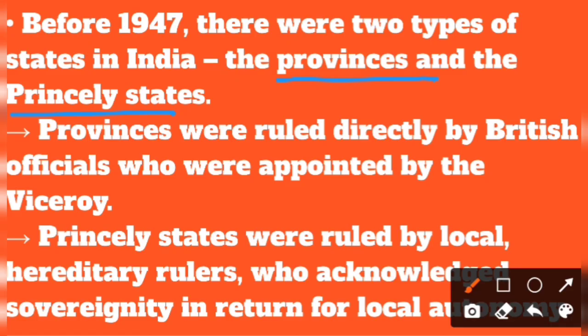Provinces were directly under British rule, controlled by a viceroy. Princely states had local rulers who governed under their own rules but were also under British influence.